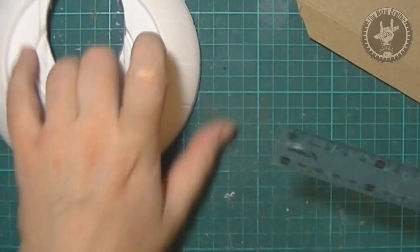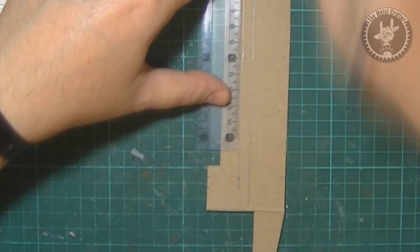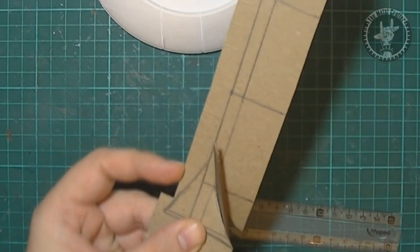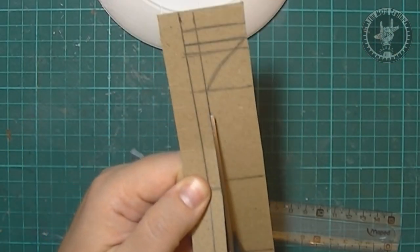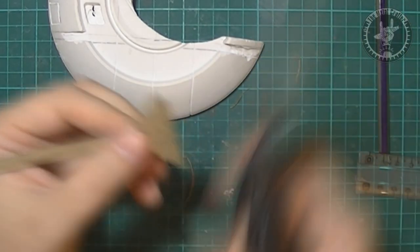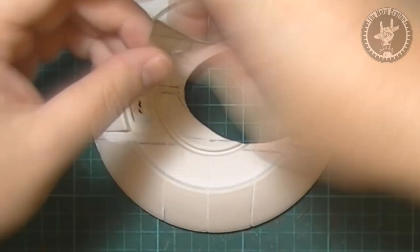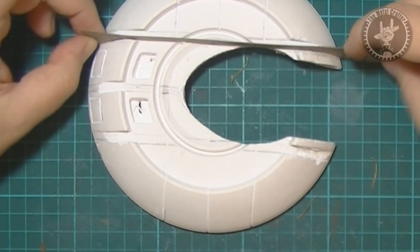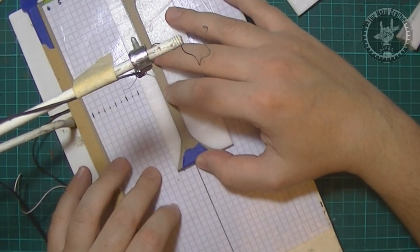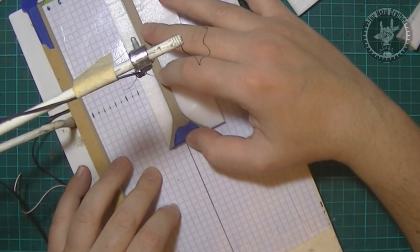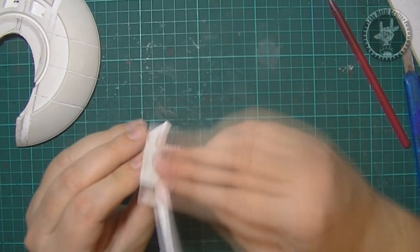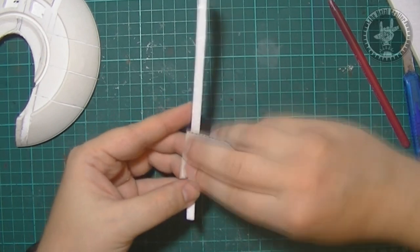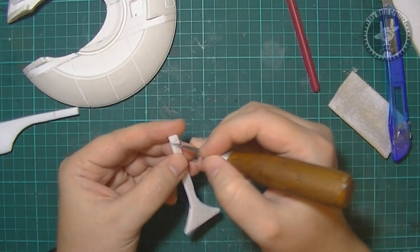I was going to make the flaps with foam, but before that I made a kind of a stencil with chipboard, to adjust the shape to fit the ship. Then cut three flaps and rounded the edges.